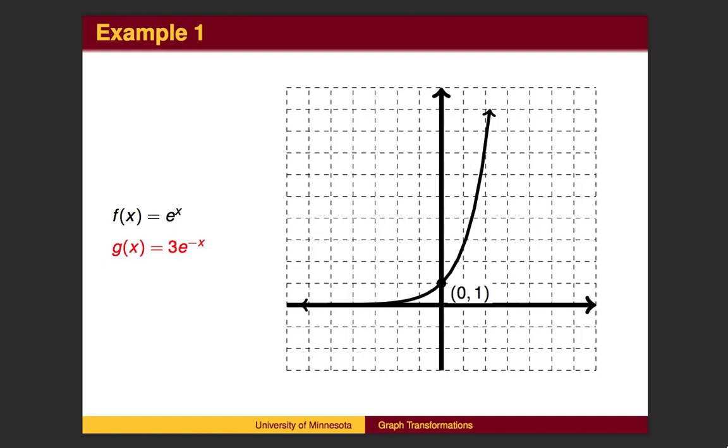Here are two examples. See if you can sketch the graph, including identifying where the key points will move. In this first example, what two changes need to be made to the graph of the exponential function to get the graph of g of x equal to 3e to the negative x.